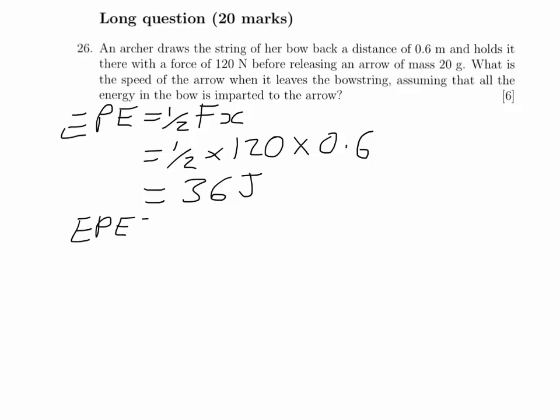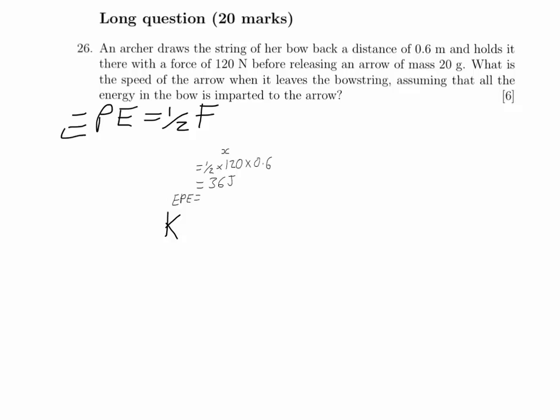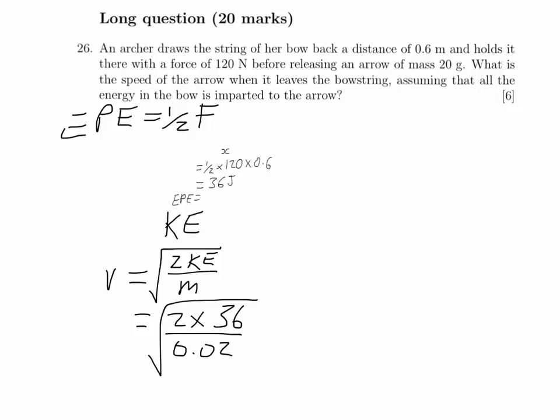We're going to equate that to the kinetic energy, and that will tell us the speed of the arrow when it leaves the bowstring. So we're going to rearrange our equation for kinetic energy, half mv squared, to make v the subject. That's the square root of 2 times the kinetic energy divided by the mass. So we've got 2 times 36 was our energy stored in the bow there, and mass of the arrow, 20 grams, 0.02 kilograms.